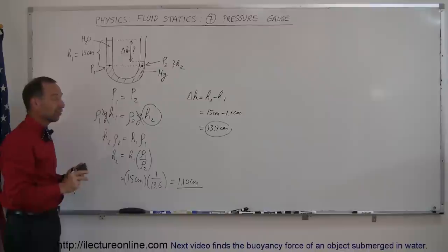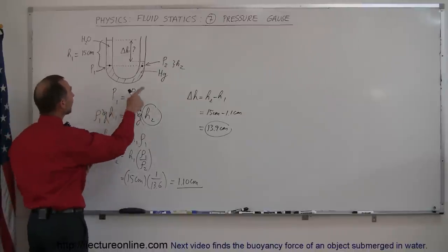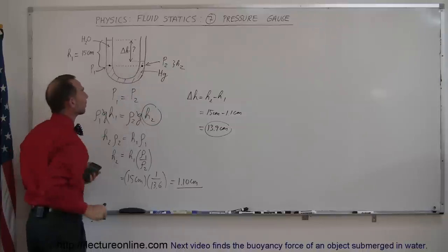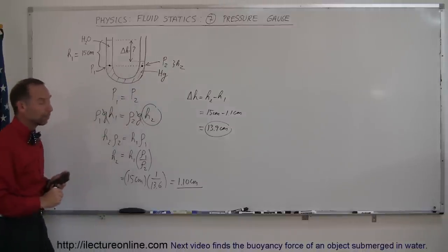So the whole trick is this is not a hard problem if you just realize: find the place in the tube where the pressure is exactly equal on both sides with the same height for both of those points, and that's how you do that problem.